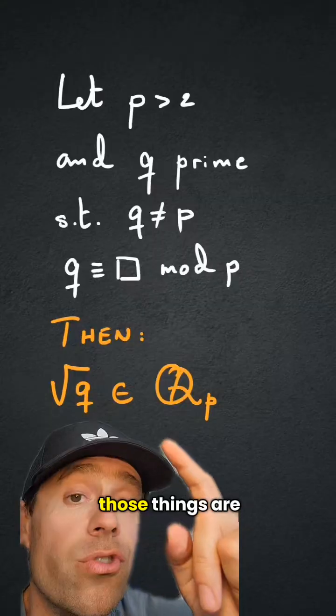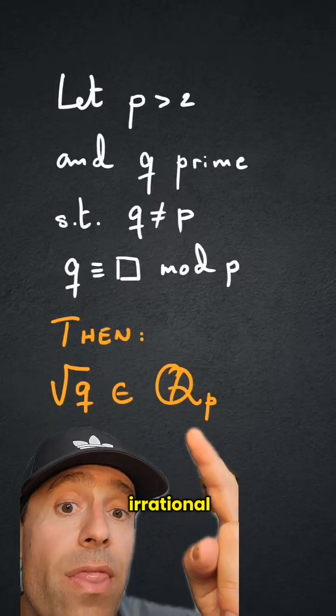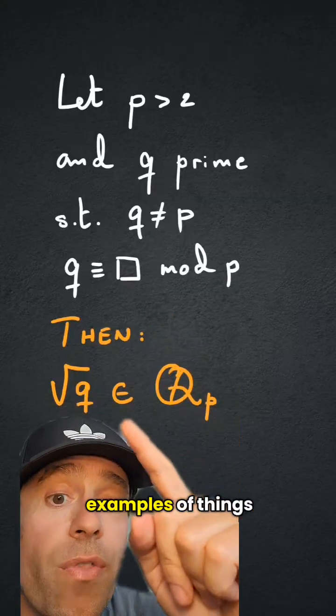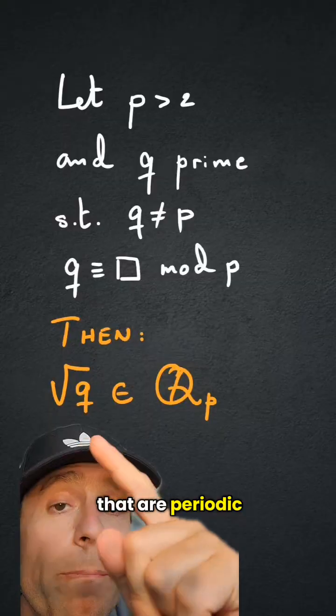We know that those things are irrational, and therefore here we have a source of examples of things that are p-adic, but not in Q.